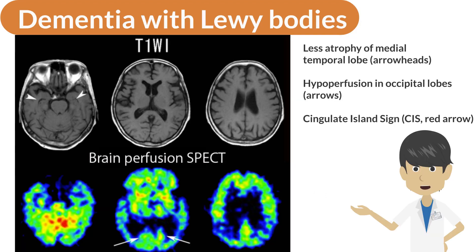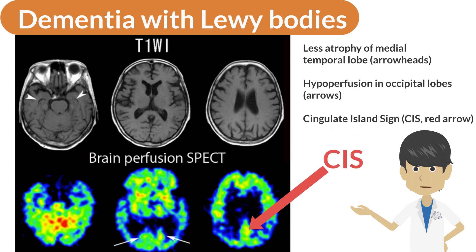In dementia with Lewy bodies, MRI shows less atrophy in the medial temporal lobe, and brain perfusion SPECT shows mildly reduced perfusion in the occipital lobe. Decreased perfusion in the temporoparietal cortex is similar to that seen in Alzheimer's disease, but perfusion in the posterior cingulate gyrus is relatively preserved, referred to as the cingulate island sign.